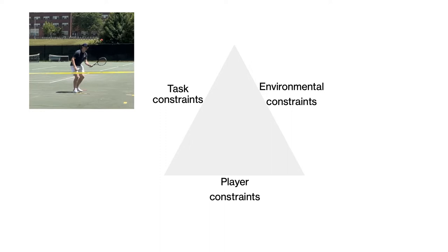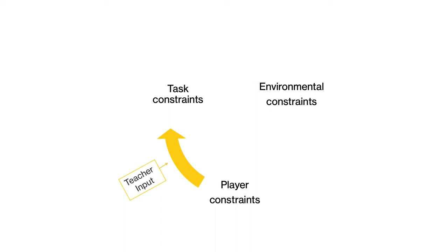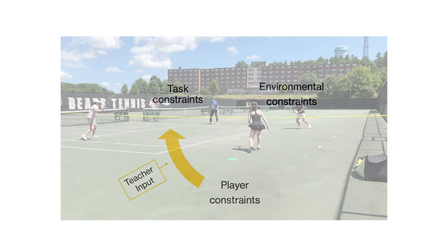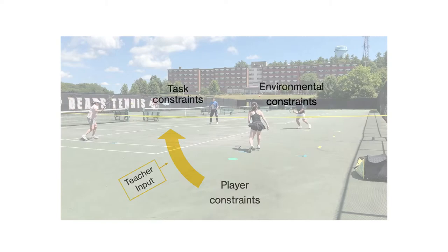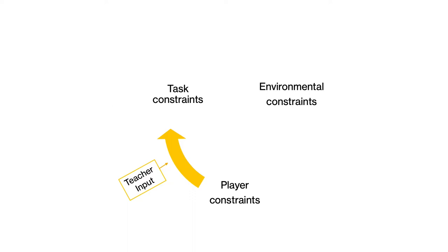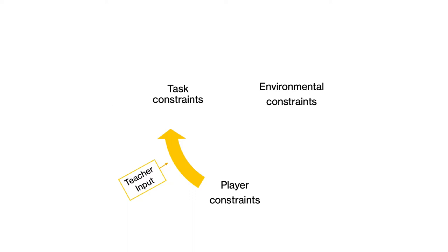The task becomes a way of mediating the player into that environment. The teacher gives input to set up the task that will help the learner and player develop goals and structures as they enter into the environment. This looks like a modified game based on tennis, but with exaggerated rules to focus on a tactical problem or solution. For example, a teacher might demonstrate the task with a partner saying: serve the ball from hand, rally with your partner in this small court four balls in a row, and then try to win the point — first to win four points wins. In motor learning, this is called a representative learning design.